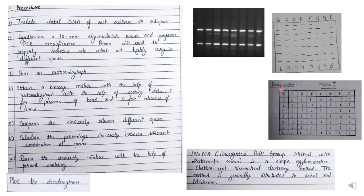This is called a binary matrix. From this data we can see that band number 1 is absent in cultivar B, while it is present in cultivars C, D, and E. So band number 1 is shown with 0 in B, while in C, D, E, and F it is shown with 1. In G, band number 1 is absent, so we show it with 0. We make a diagrammatic representation of the bands from the gel, then make a binary matrix by scoring the data with 0 for absence and 1 for presence of a band.